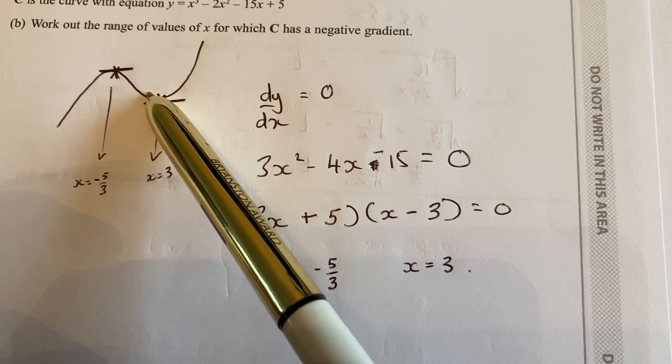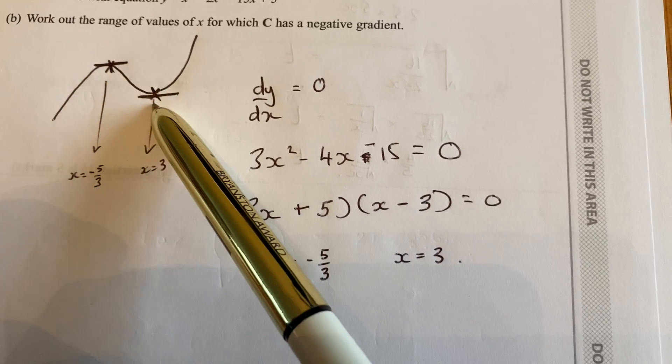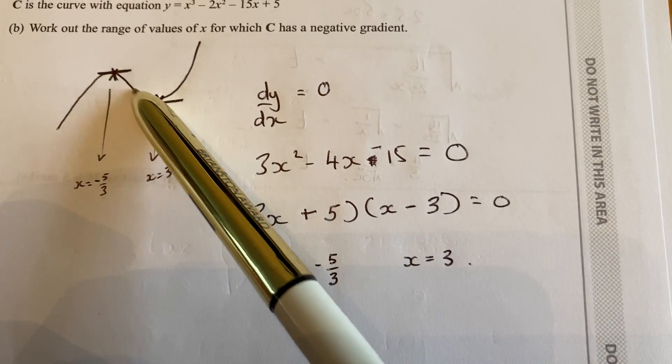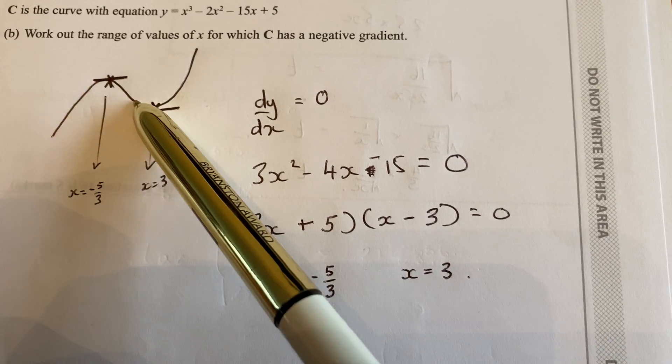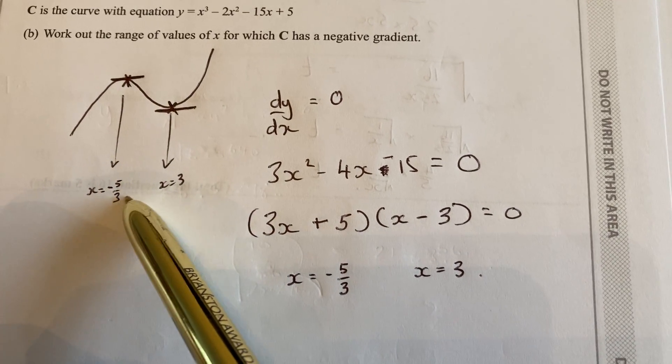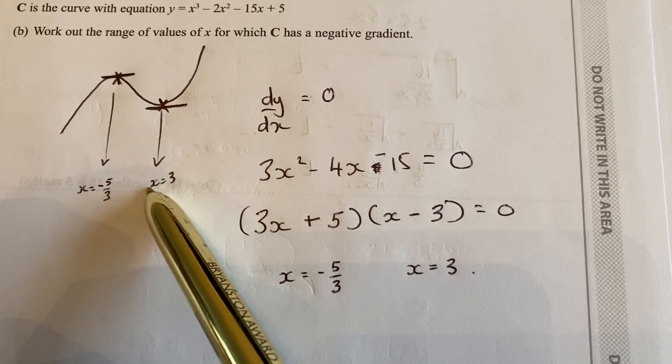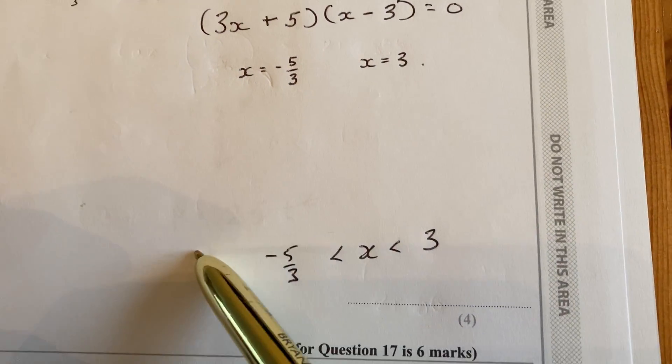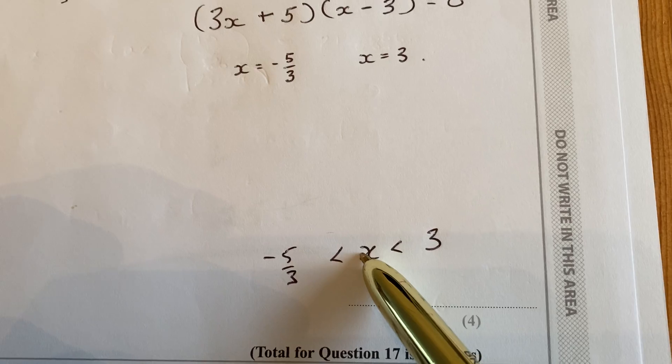So in between those two x values on the graph is where you would get the downhill part, or the negative gradient of this cubic graph. So anywhere where x is between these two values is where you would get a negative gradient. How you write that is that x needs to be smaller than 3, but bigger than minus 5 over 3.